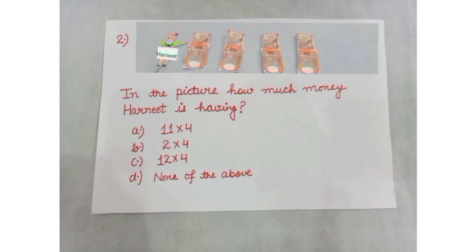Students, you can see in the picture, Harneet is having 4 times 12, and we write it as 12 into 4. So the right option is option C.